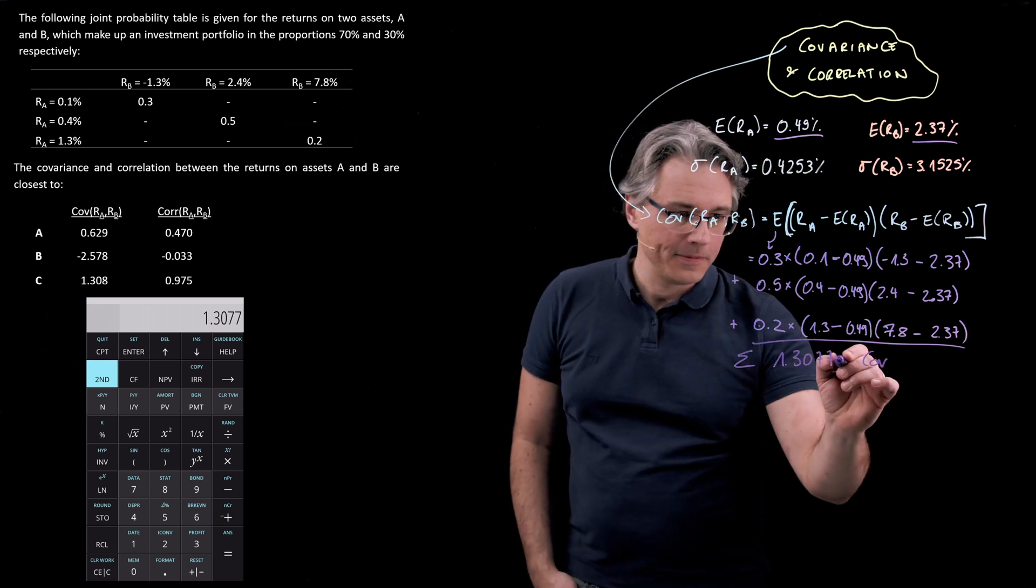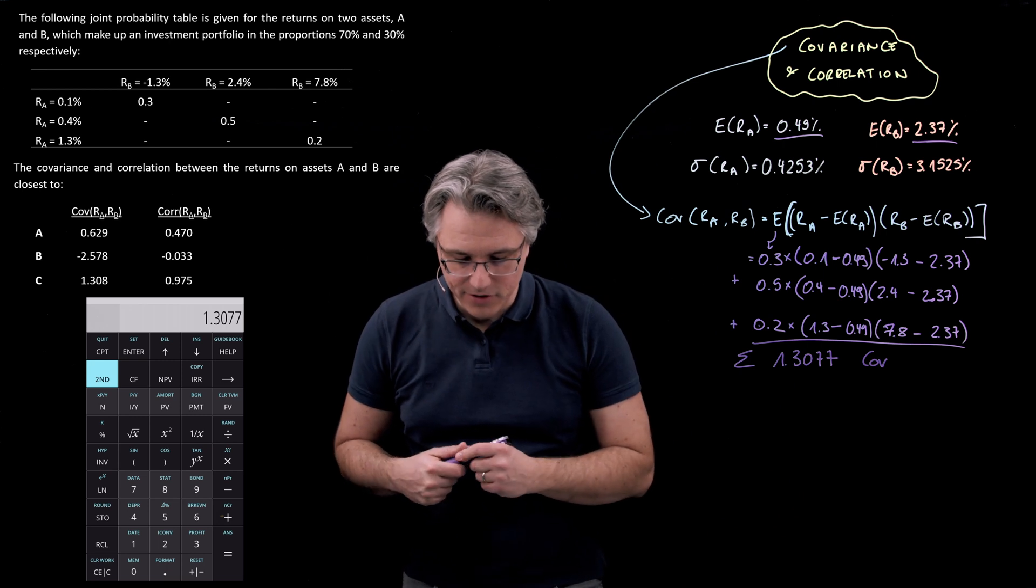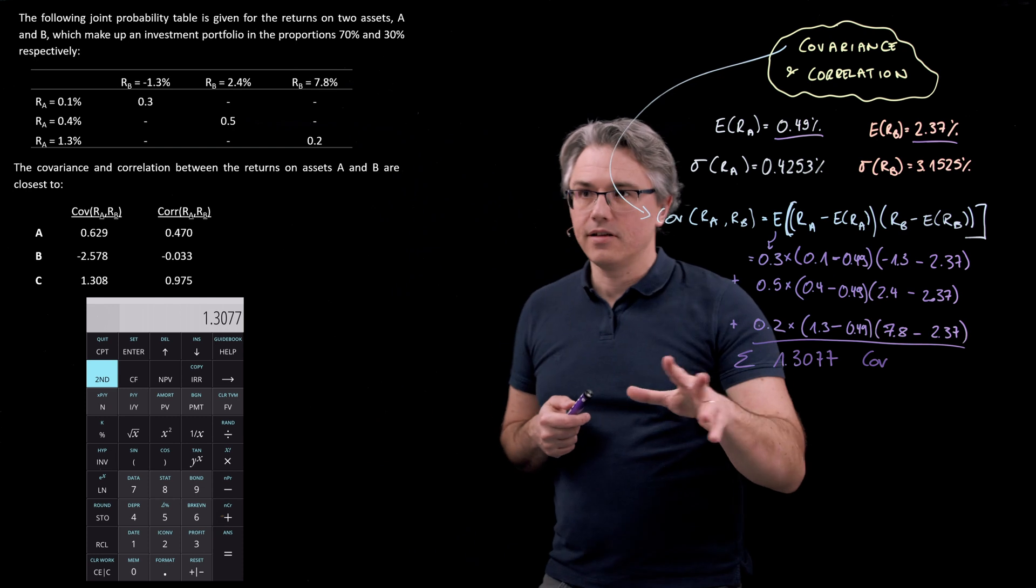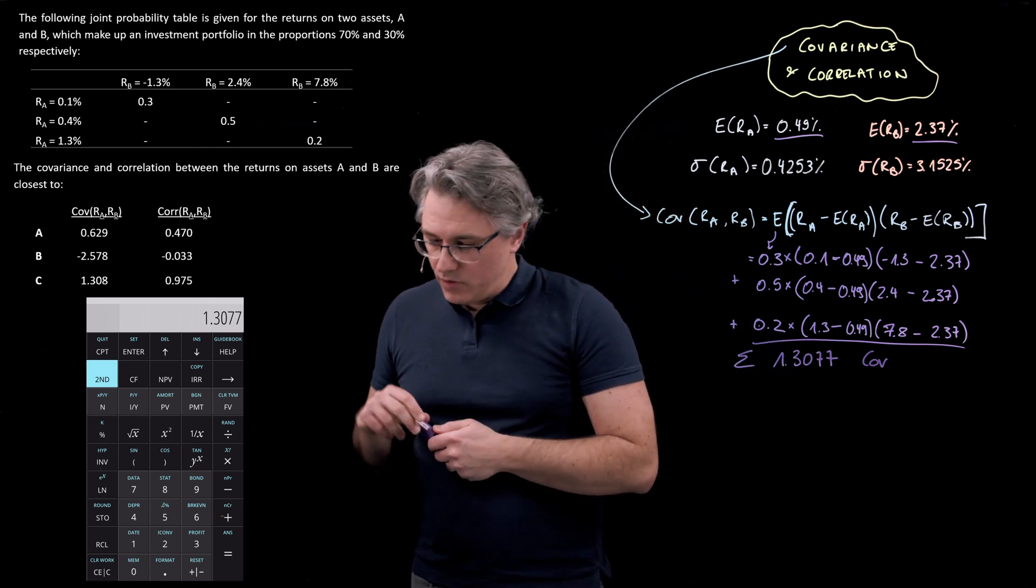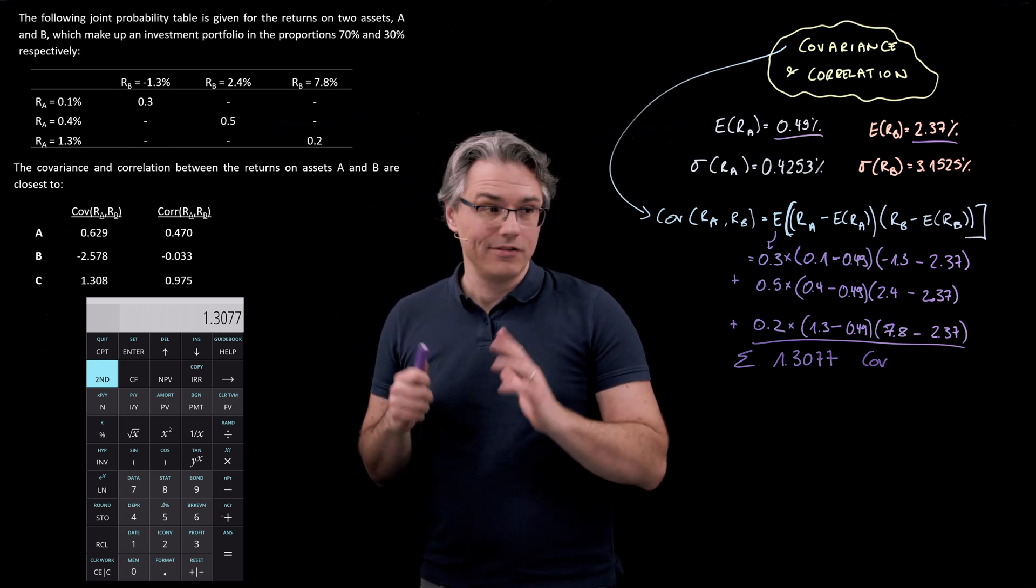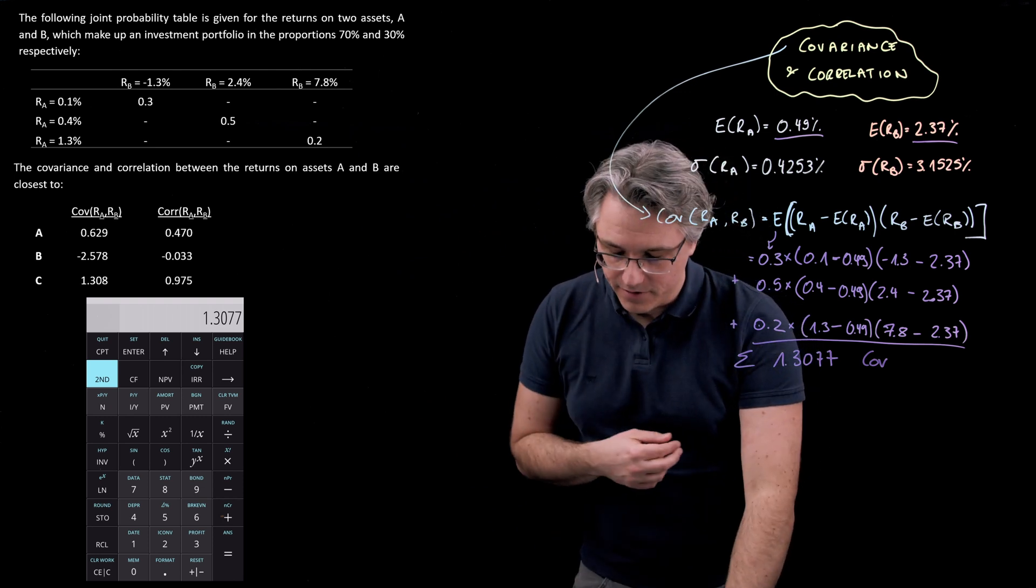If you look back at the possible answers to this question, you can immediately see that this result corresponds very nicely with answer C, 1.3084 covariance, and we could have solved this question right here, right now. But obviously, we're going to compute correlation as well.